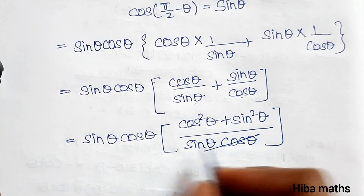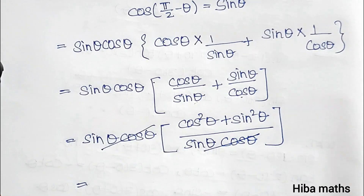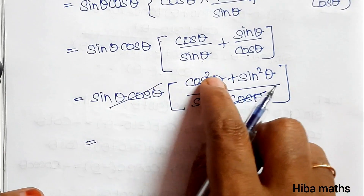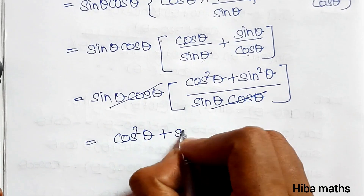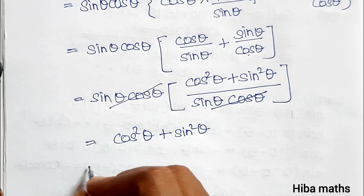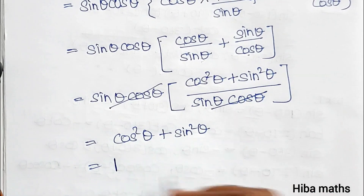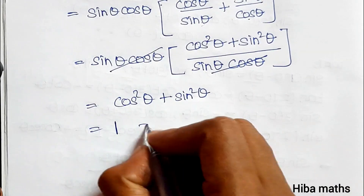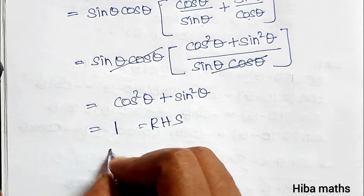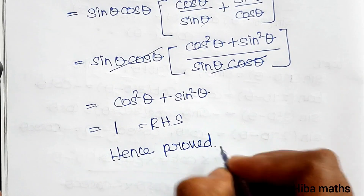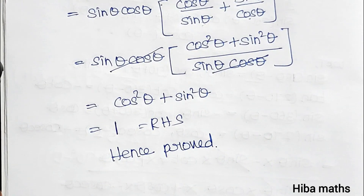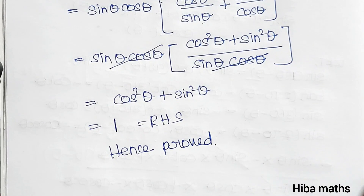Now sin θ · cos θ cancels. We know that cos²θ + sin²θ = 1, so the numerator equals 1. Hence the LHS equals 1 which equals RHS. Hence proved. The tablo column identities are very important — sin(90° − θ) and cos(90° − θ). It is very easy to solve. Thank you so much for watching.